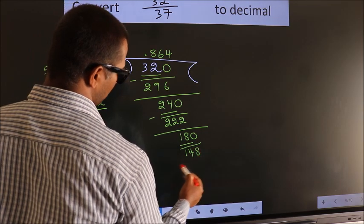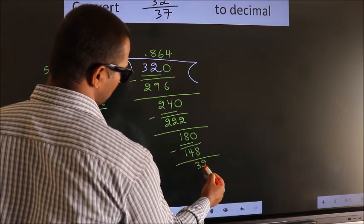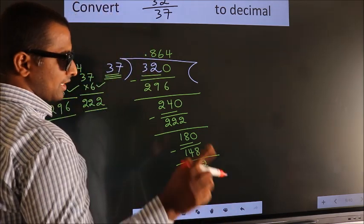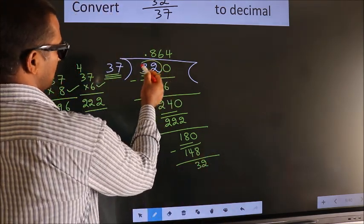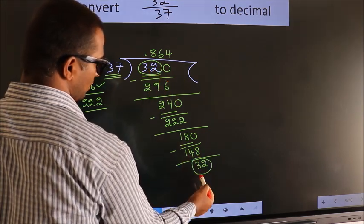148. Now we subtract, we get 32. Now here you observe, we had 32 here, and we got 32 again.